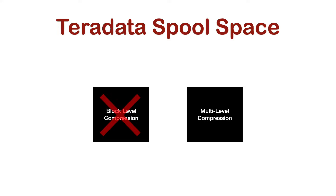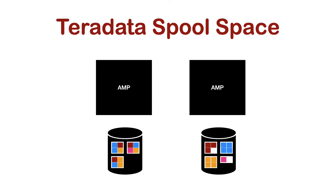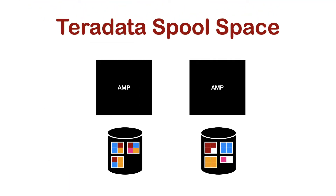A relatively unknown trick, with which it is often possible to reduce table size by up to 90%, is to design row-level partitioning so that the same values from a column are placed in the same partitions. This way, they are stored locally in the same data blocks and can be compressed much better by block-level compression. Removing fallback protection and unused indexes is another option to free up space. However, with the newer Teradata systems, fallback protection is mandatory.